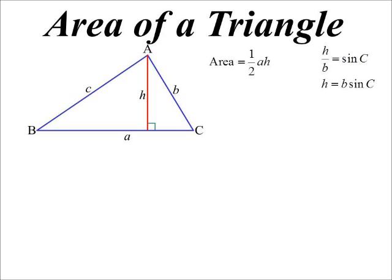So if I sub that in, there's our formula, half A, B sine C. So the product of any two sides, halve that and multiply it by the sine of the included angle between the two sides.